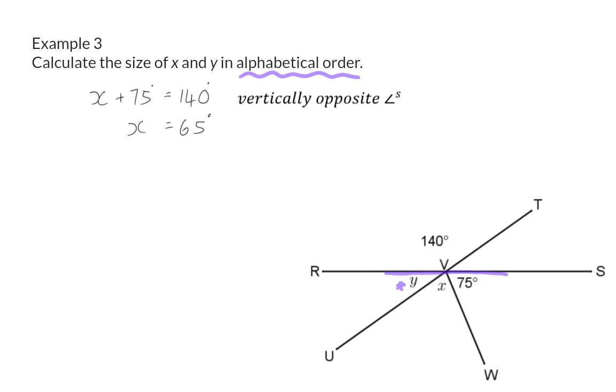Now we can go back to our previous straight line, saying that y + x + 75 should add up to 180 degrees. Or, even easier, we can focus on a new straight line, in this case line TU, and say that y + 140 degrees should add up to 180 degrees.